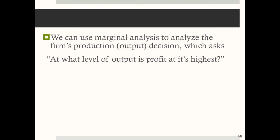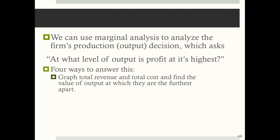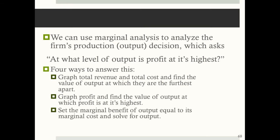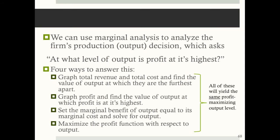We use marginal analysis to analyze the firm's production or output decision, which asks: at what level of output is profit at its highest? There are really four ways to answer this question. First, graph total revenue and total cost and find the value of output at which they are furthest apart — because the difference between total revenue and total cost is profit. Or we could graph profit directly and find the value of output at which profit is highest. We can set the marginal benefit of output equal to its marginal cost and solve for output, or we can maximize the profit function with respect to output.